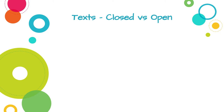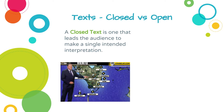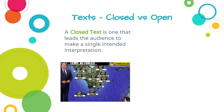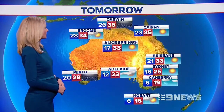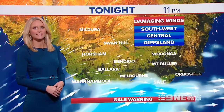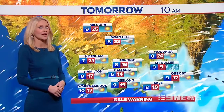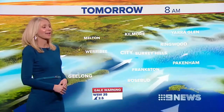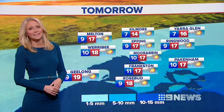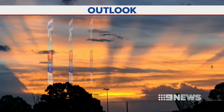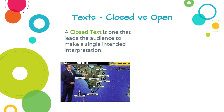A closed text is one that leads the audience to make a single interpretation — typically the one the media producer intends. For example, a weather report saying tomorrow in Melbourne it will be sunny and 25 degrees: if you spoke to 100 people who saw that bulletin, every one would say the same thing. Nobody would say they believe it's going to be snowing and only five degrees. We absorb what's in that text and have only one interpretation of it — that's a closed text.